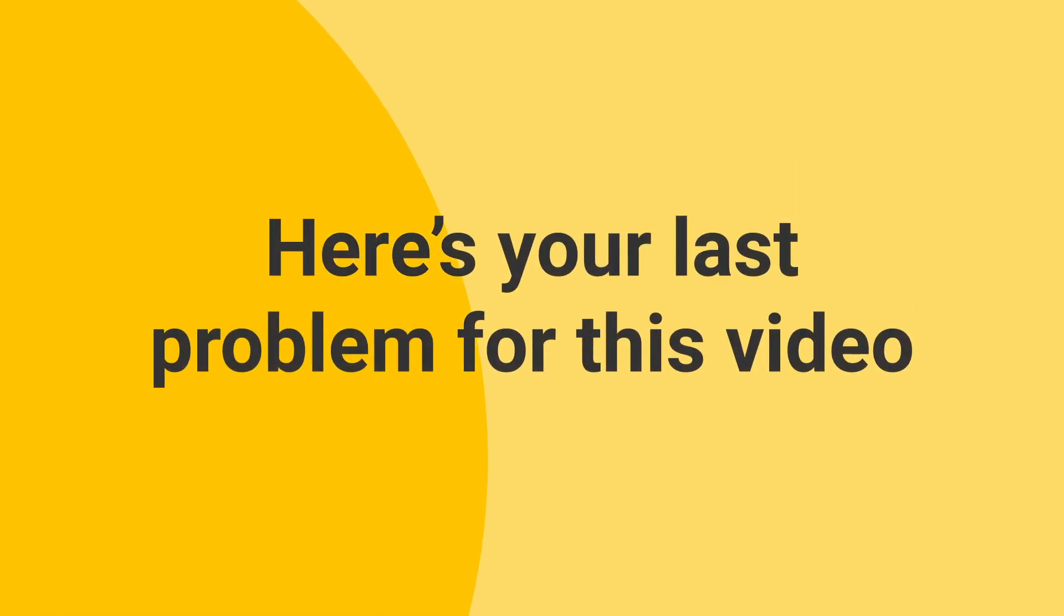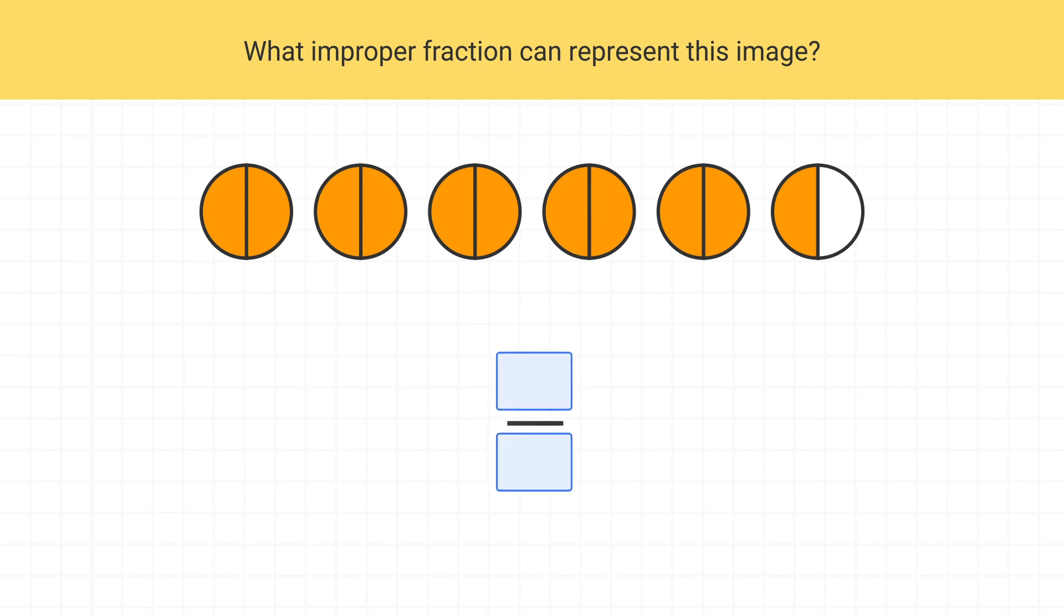Now here's your last problem for this video. What improper fraction can represent this image? We can count that there's a total of 11 shaded pieces, so our numerator is 11. Then we can see that each circle is made up of 2 total parts, so our denominator is 2. We use the improper fraction 11 halves to describe this image.